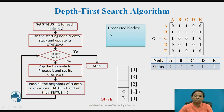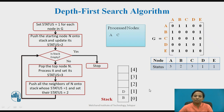Stack is not empty, so pop the top element: node C is popped and processed. Status of C is changed from 2 to 3. The adjacent nodes of C are A and D. A is already processed with status 3, and D has status 1, so we push D onto the stack and change D's status from 1 to 2. Stack is not empty; pop node D. Node D is processed and its status is changed from 2 to 3.